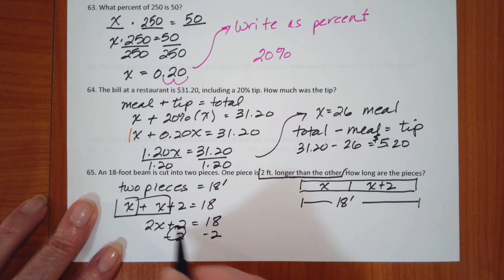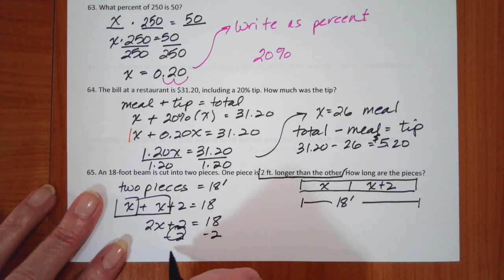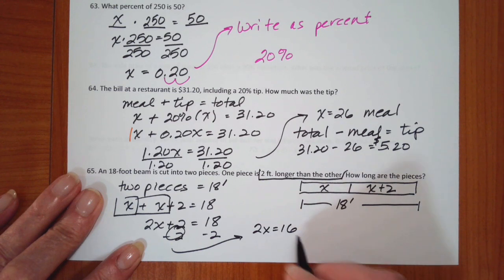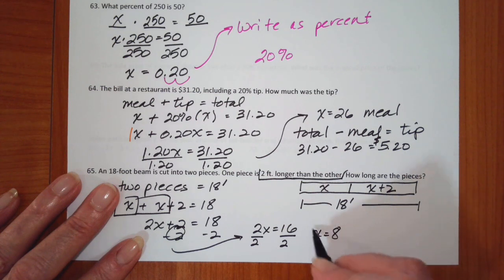Subtract 2 from both sides. Let me do this over here. This gives me 2x is equal to 16, which gives me x is 8.